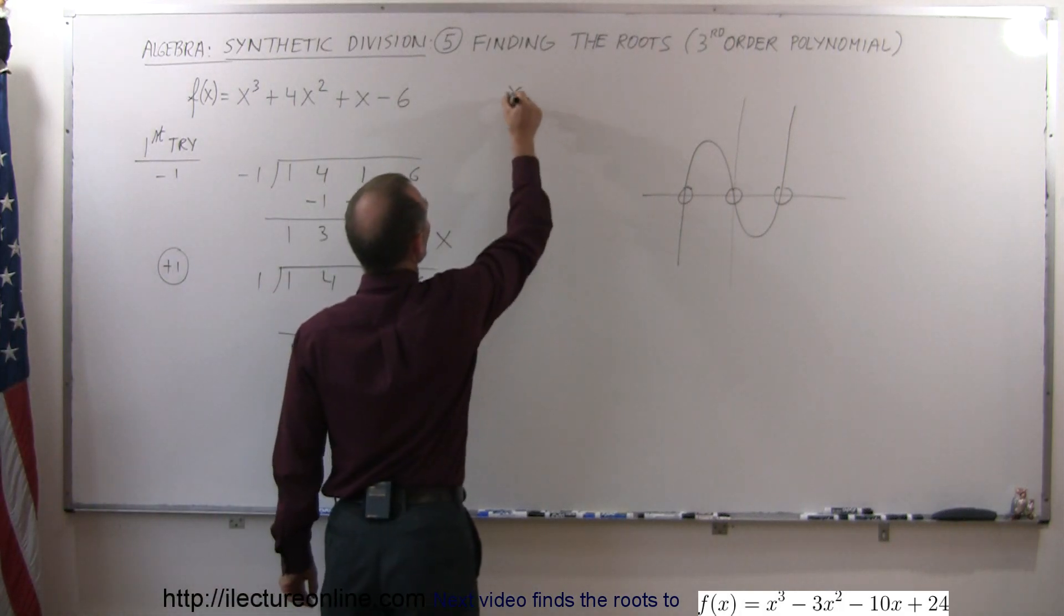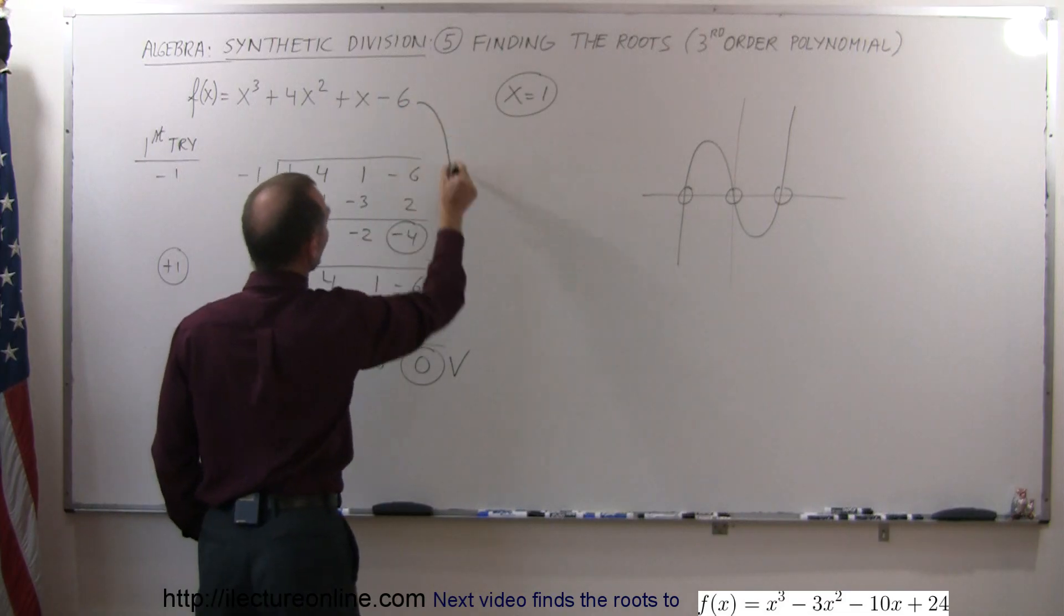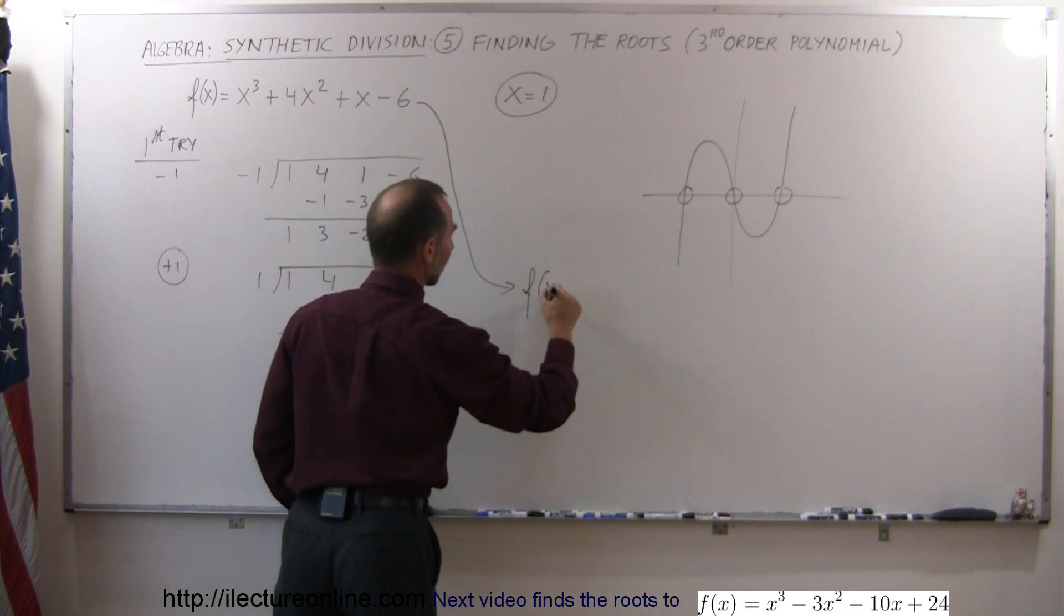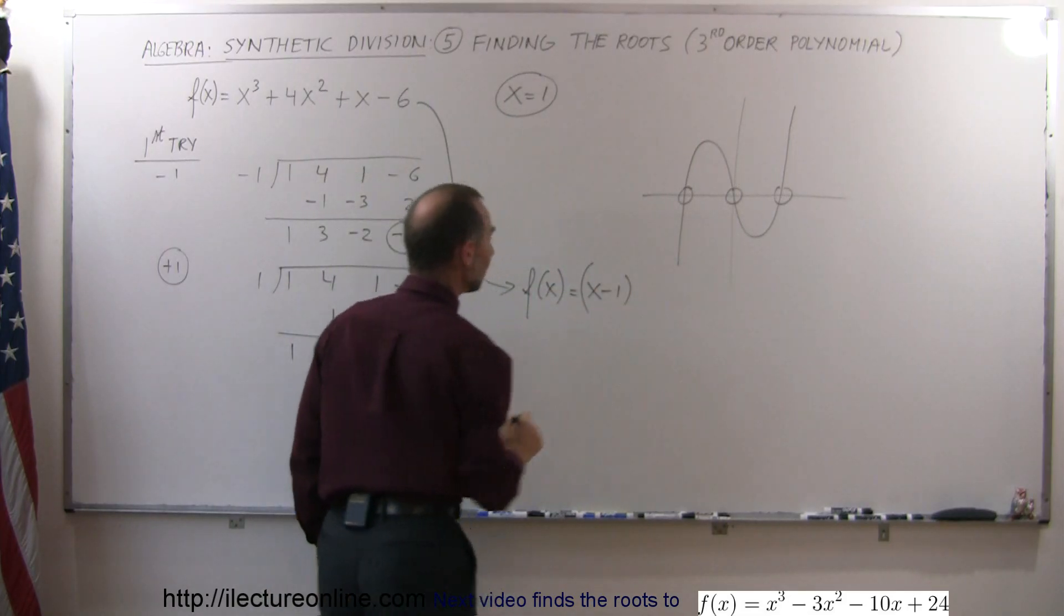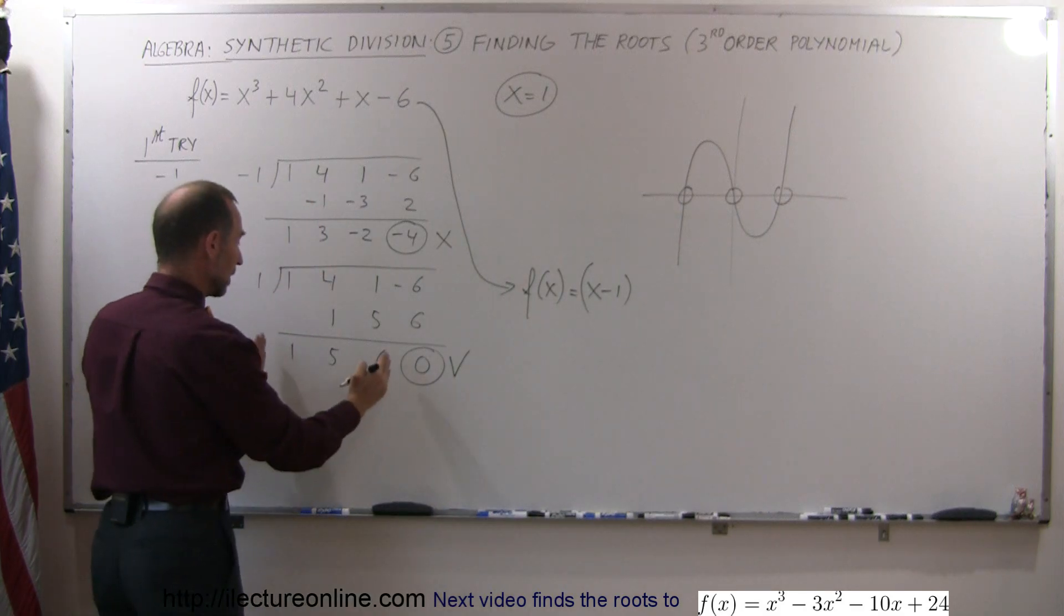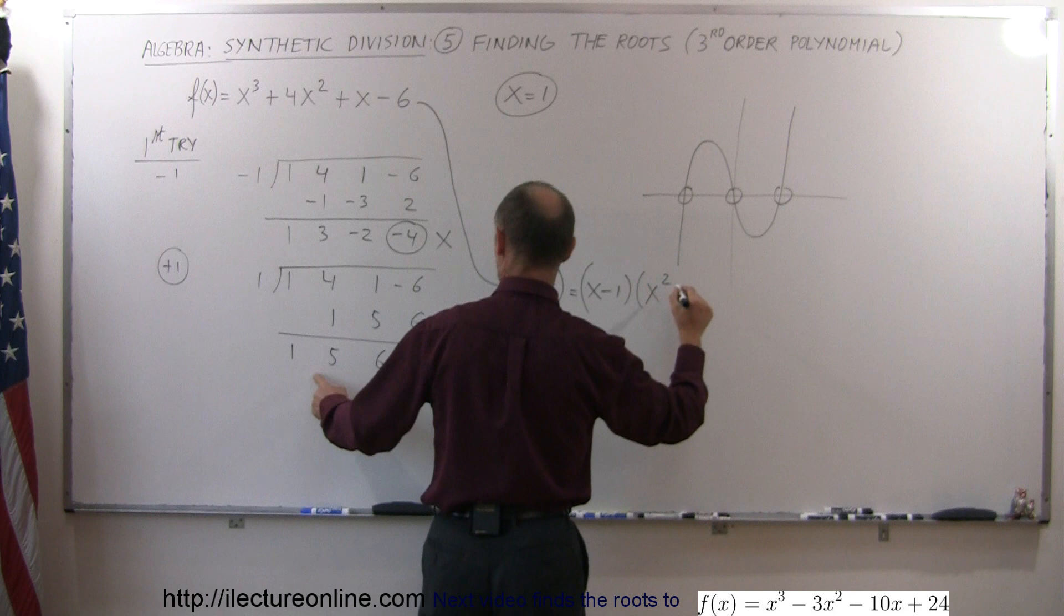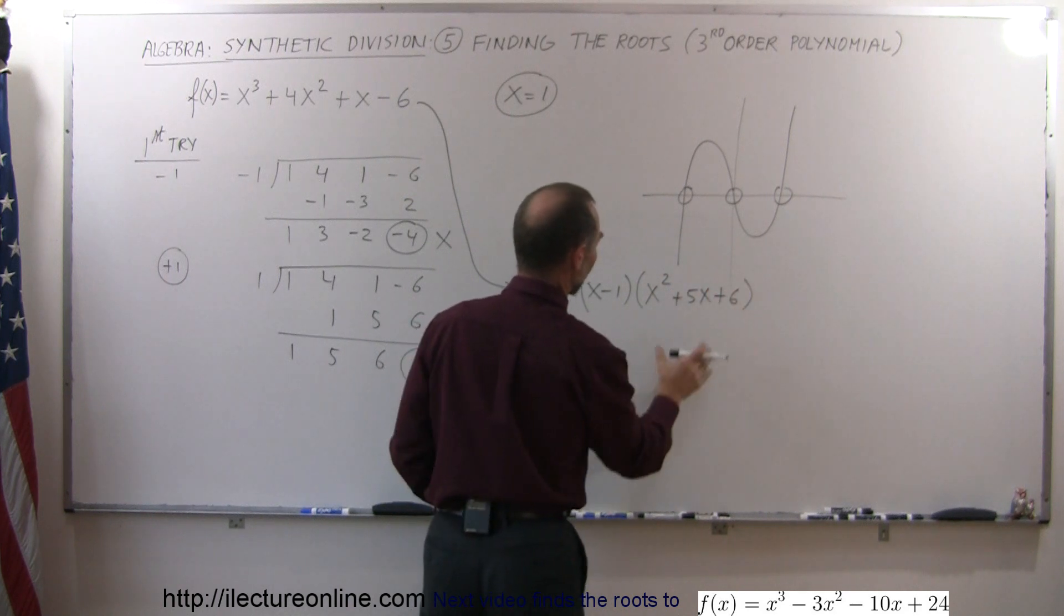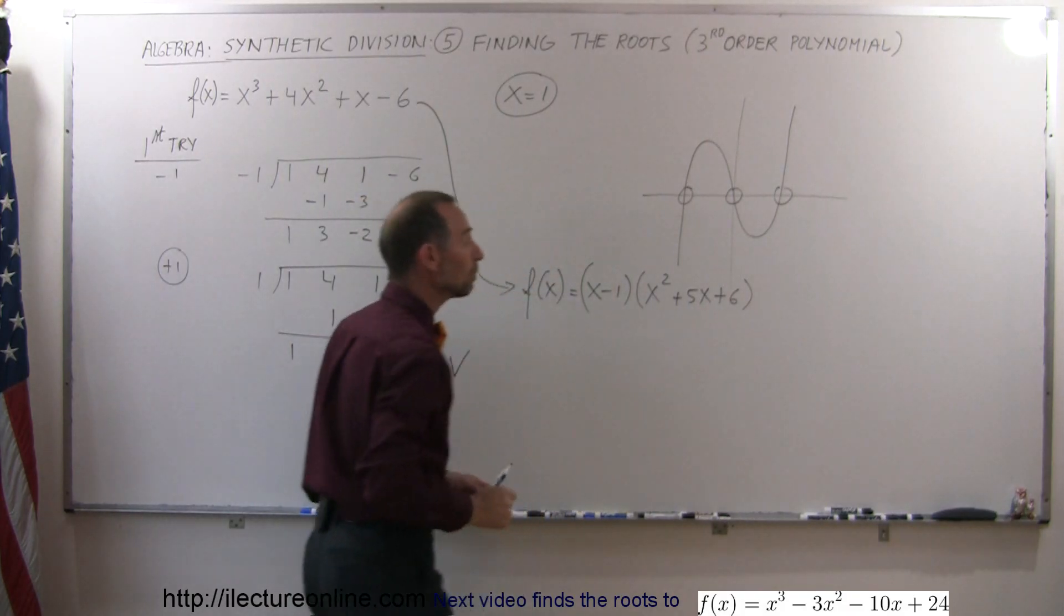That means x equals 1 is one of the roots. And so that means our polynomial now can be written as f of x is equal to, since that's one of the roots, it would be x minus 1 times what's remaining here would be x squared plus 5x plus 6. And of course, to continue then, we need to find the roots of this part of the polynomial.